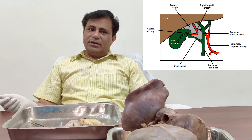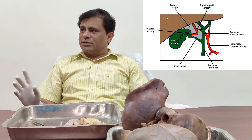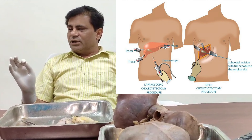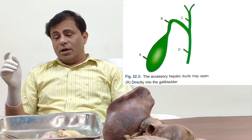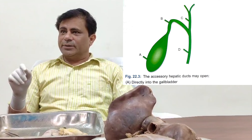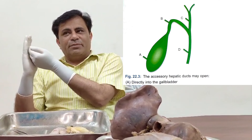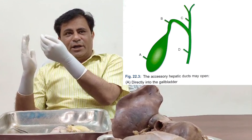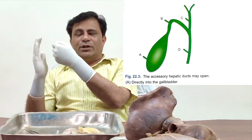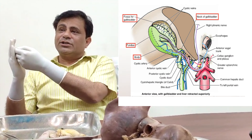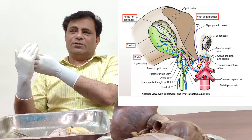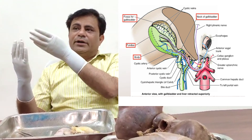I have told you about the boundaries, contents, and purpose of cholecystectomy — the removal of the gallbladder. Post-cholecystectomy, there are accessory biliary ducts which connect the gallbladder to the gallbladder fossa. There is some communication between the gallbladder and the right lobe of the liver itself. The venous drainage from the anterior surface of the gallbladder sometimes drains directly into the liver.